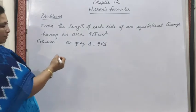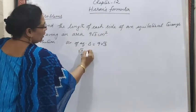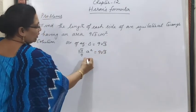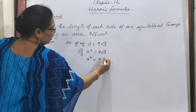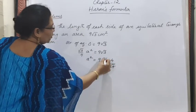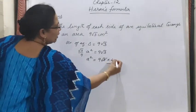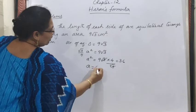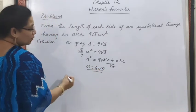The formula we studied yesterday is: √3/4 × a² = 9√3. So a² = 9√3 × 4/√3. The √3 cancels out, giving a² = 36, therefore a = 6 centimeters.